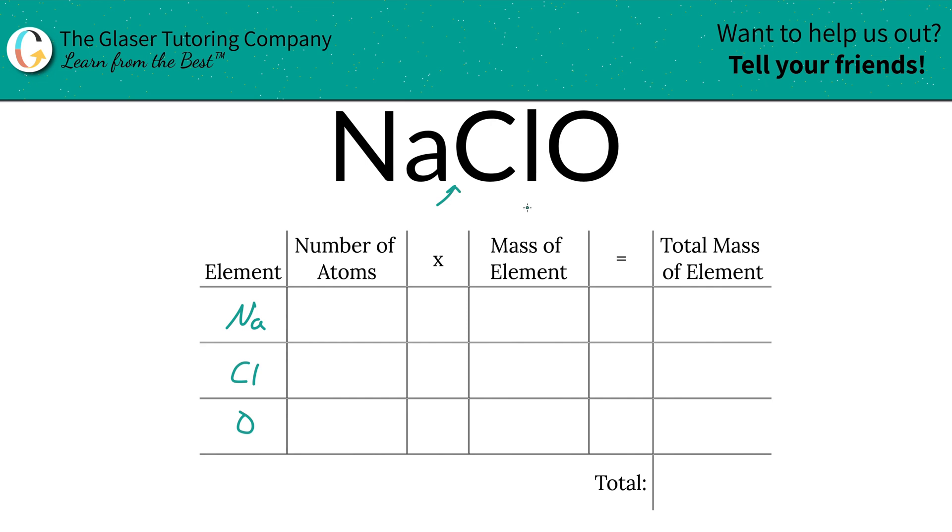Next is to identify the number of atoms, and that's where the subscripts come into play. If you don't see anything down there, just put a 1 in there, because that's what it is assumed to be. So we've got one atom of each.